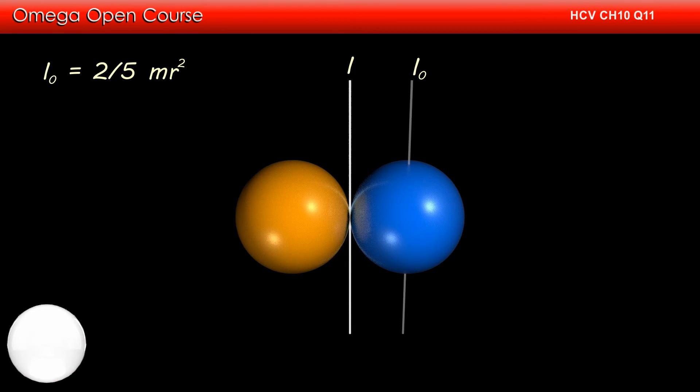We know that the moment of inertia of a sphere about an axis passing through its center of mass is given by 2/5 mr², therefore I₀ is equal to 2/5 mr².